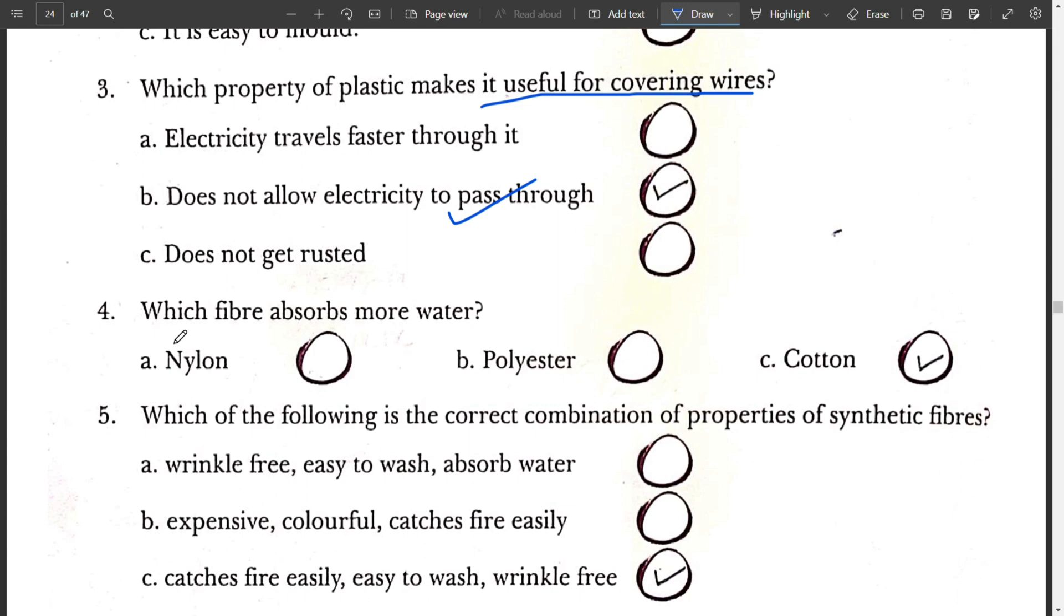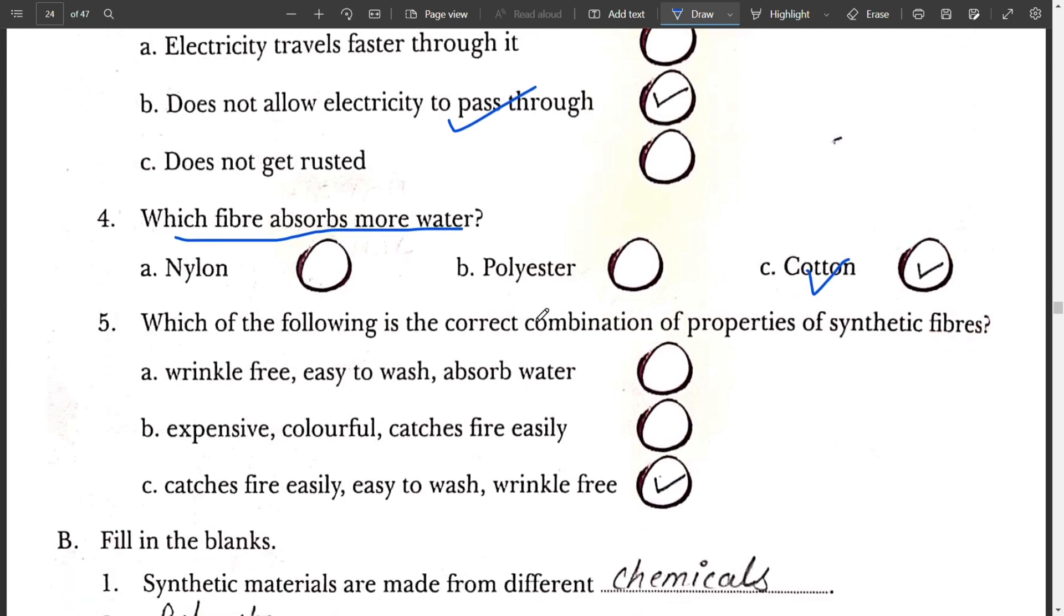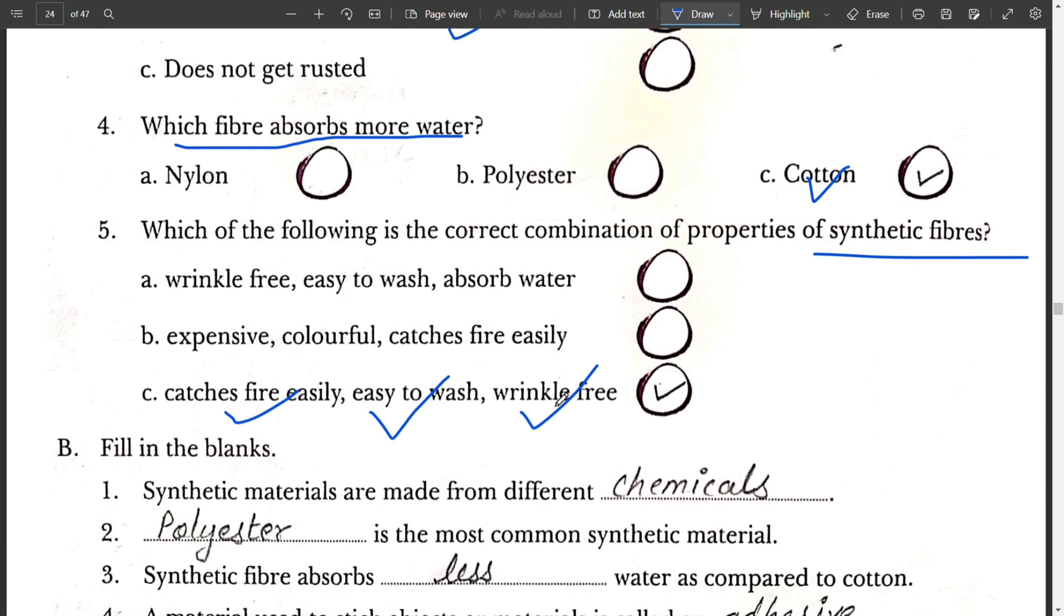Question number 4. Which fiber absorbs more water? Cotton absorbs more water. Question number 5. Which of the following is correct combination of properties of synthetic fiber? It catches fire, easy to wash and it is wrinkle free. These are the properties of synthetic fiber.